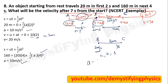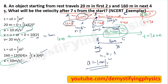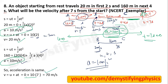Since the acceleration is the same throughout the entire motion — 10 meter per second square — we can now find velocity at 7 seconds. Consider the whole path: u is 0, time is 7 seconds, acceleration is 10 meter per second square. Use the first equation of motion: v equals u plus at. U is 0, at is 10 times 7, so the velocity is 70 meter per second after 7 seconds.